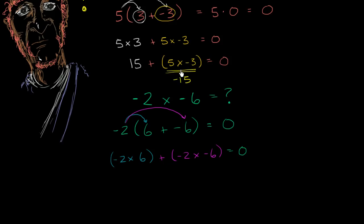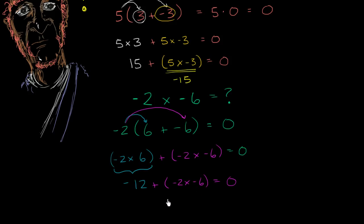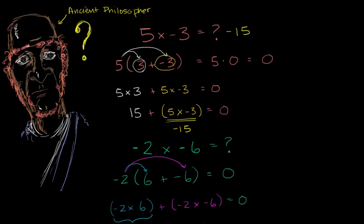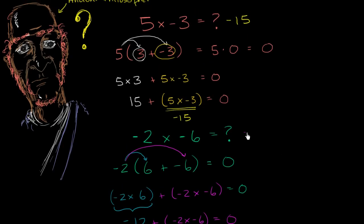We also saw that when we multiplied a positive times a negative, we got a negative. So negative 2 times 6 is negative 12. That means negative 12 plus whatever negative 2 times negative 6 is needs to equal 0, in order to be consistent with all of the other mathematics we know. What plus negative 12 equals 0? Positive 12. So negative 2 times negative 6 needs to equal positive 12 in order to be consistent with all of the other mathematics we know.